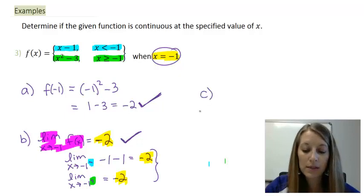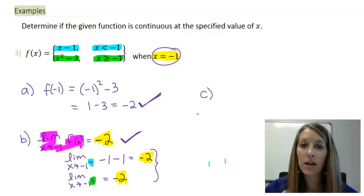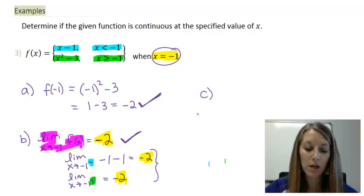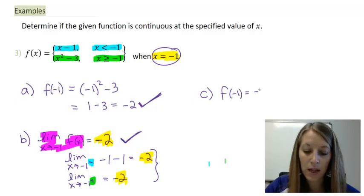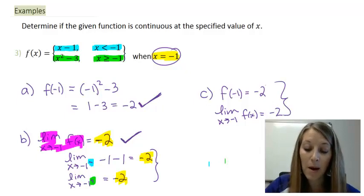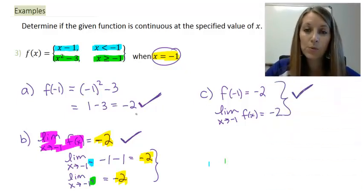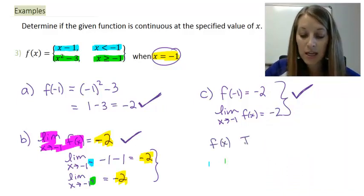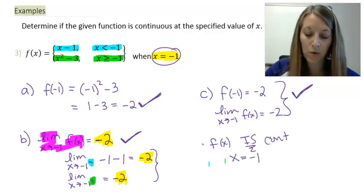Let's move on to property C, which asks: do our answers from part A and part B match? In part A, we found f of negative one equals negative two. In part B, we found the limit as x approaches negative one of our function equals negative two. Since those values match, property C holds. We've just proved that all three properties hold, which means our function is continuous at x equals negative one.